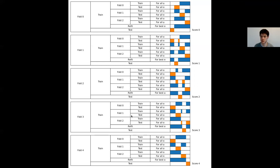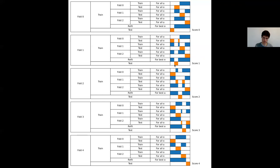We can then compute a different split of our data and repeat the procedure. That's nested cross-validation with a grid search for the hyperparameter. For each fold of the outer cross-validation, we set aside some test data, do another cross-validation loop in the remaining data to get scores for each candidate model, select the best model, refit it on the training data, and evaluate it on the outer loop's test data that was set aside from the start.